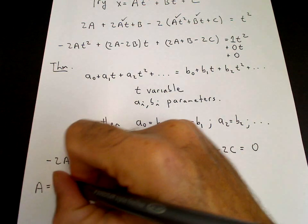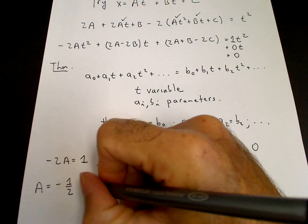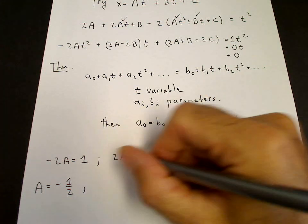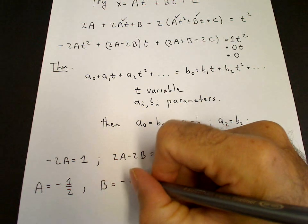A equals minus a half. B equals A, so B is also equal to minus a half.